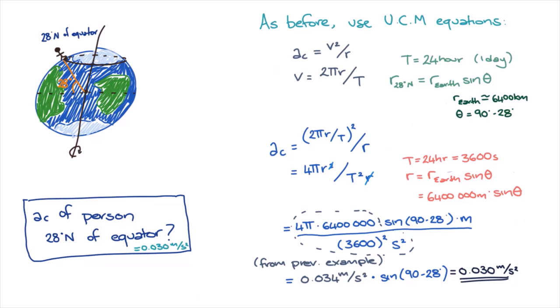Does this look right? Let's check. If our person was back on the equator, theta would be 90 degrees minus 0 degrees, which is equal to 90 degrees, and sine of 90 degrees is 1. So we'd get the same answer as we got previously. That's a good sign.